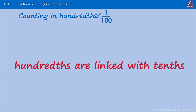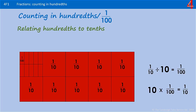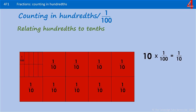Tenths and hundredths are linked. The card has been divided into tenths. With one of those tenths, we're going to divide that by ten. Each one of those pieces is one hundredth of the whole piece of card, because we'd need a hundred of those to fill it up. One tenth divided by ten is one hundredth.